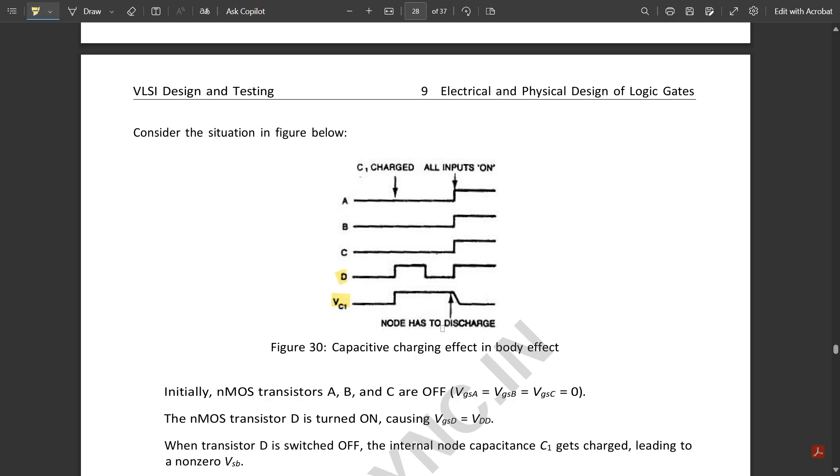In the discharging condition, since the fourth input is getting toggled and it doesn't have any relation with the first three inputs, the node has to discharge at this point but the discharging won't be happening because we have a sudden change in the input. There is one delay here, we don't have a straight line, so this is the capacitive charging effect in body effect.